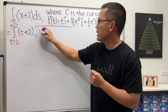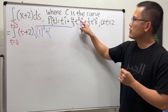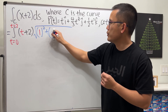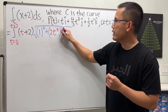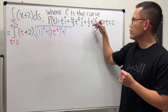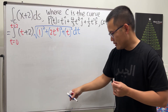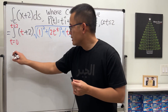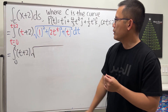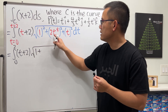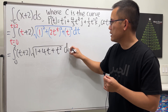Differentiating the x component gives 1, and we square that. Differentiating the second component — bring the 3/2 to the front, the 3s cancel, the 2 and 4 cancel — gives 2T to the negative 1/2 power, and squaring that gives 4T. Differentiating the third component, bringing the 2 to the front — they cancel — gives T, squared to T squared. So inside the square root we have 1 plus 4T plus T squared, times dt.